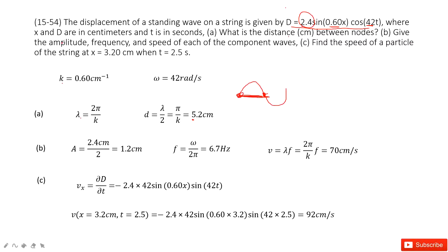It tells us this is a displacement from this peak to this peak, 2.4. So amplitude is just half of it. It becomes 1.2 cm.